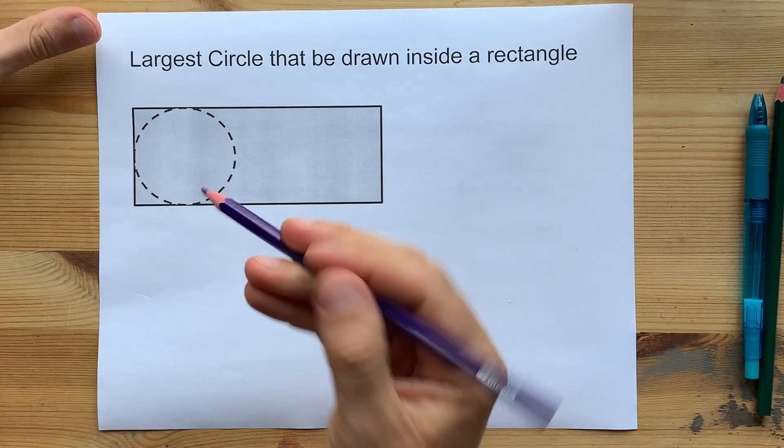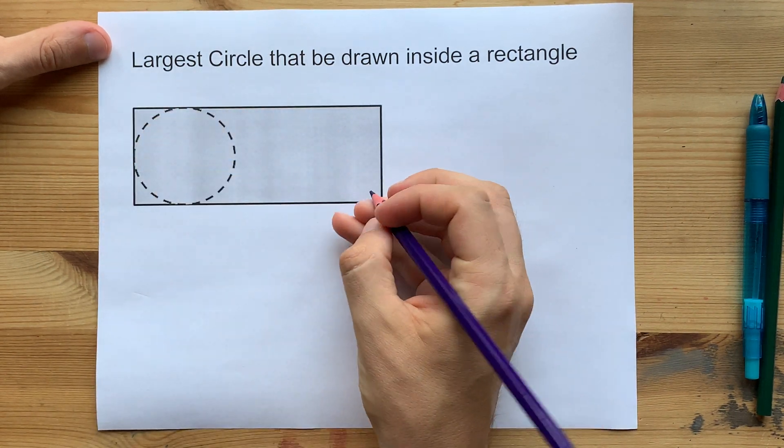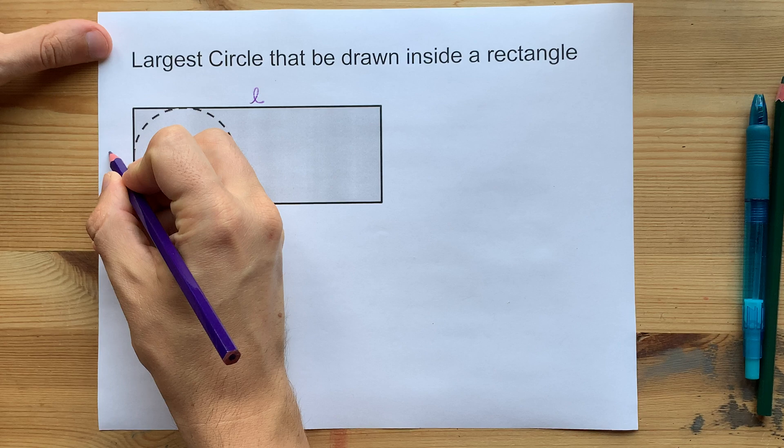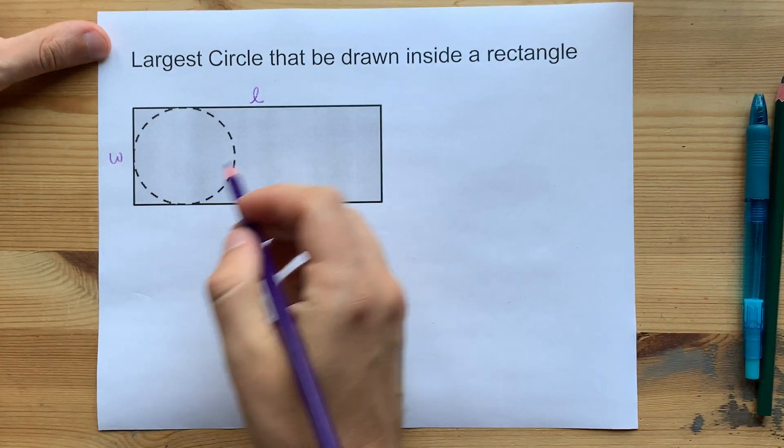But first, a rectangle can have two different dimensions. You might have the length of L and the width of W.